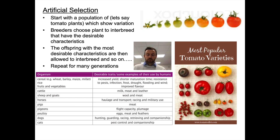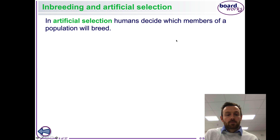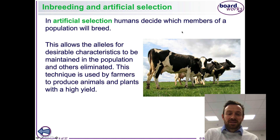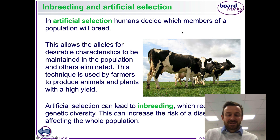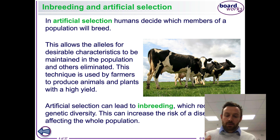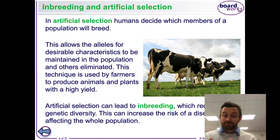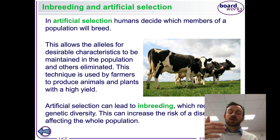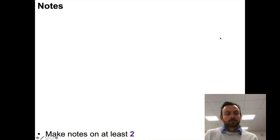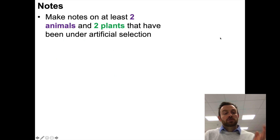Moving on to your main task of note-taking from the textbook. This slide is about inbreeding: inbreeding is when closely related animals breed together and it causes increased homozygosity, which can lead to decreased vigor. For the notes, first make notes on two animals and two plants that have been under artificial selection and what characteristics were selected for.